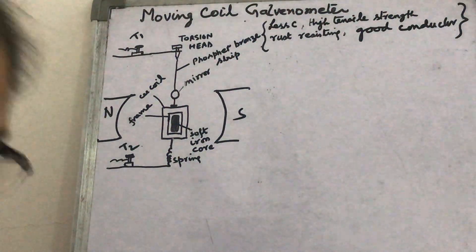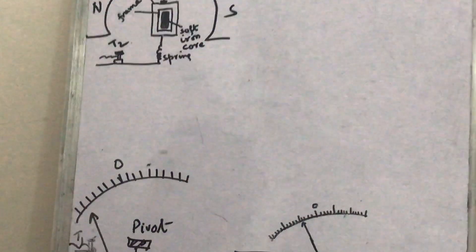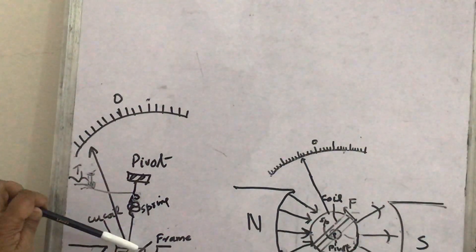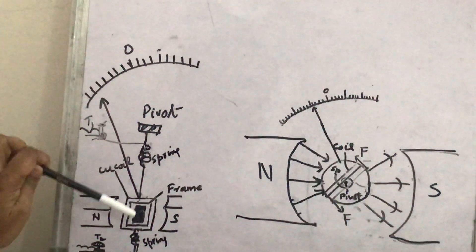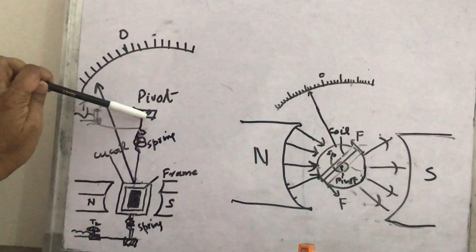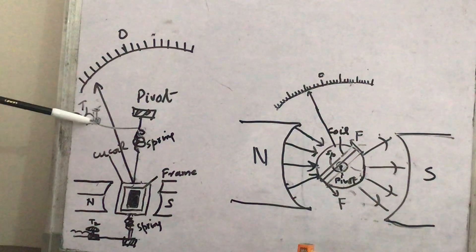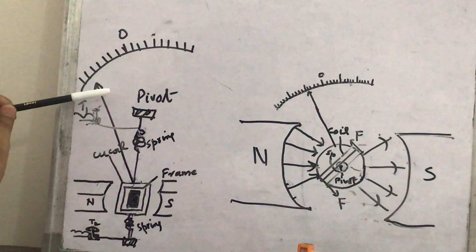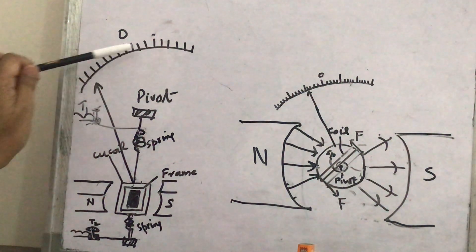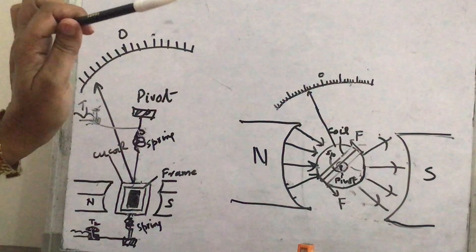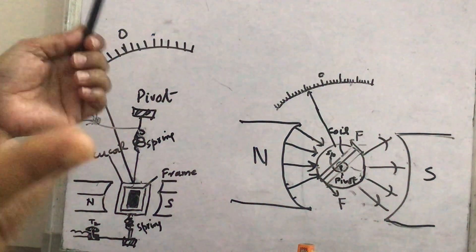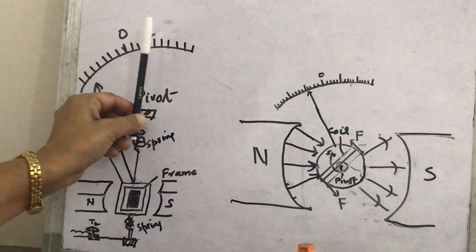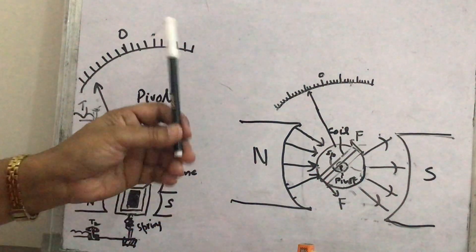The second type is the pivoted galvanometer. It has two pivots. Similarly, a soft iron core and aluminium frame are used, and the copper coil is wound on it. One end of the copper coil is attached with a spring pivoted here, and the other end similarly. A light pointer is connected to the frame which moves on a linear scale. Zero remains in the middle so the pointer can go left or right depending on the direction of current.